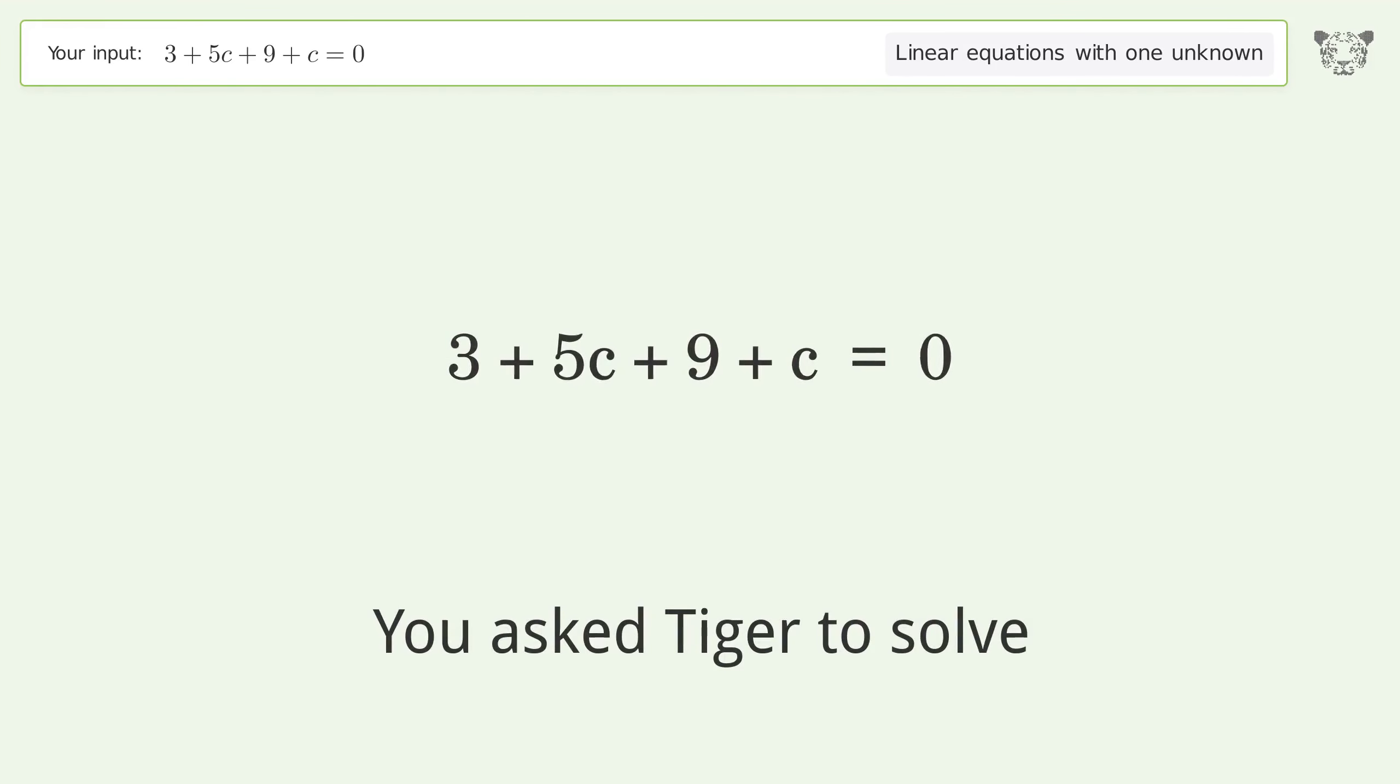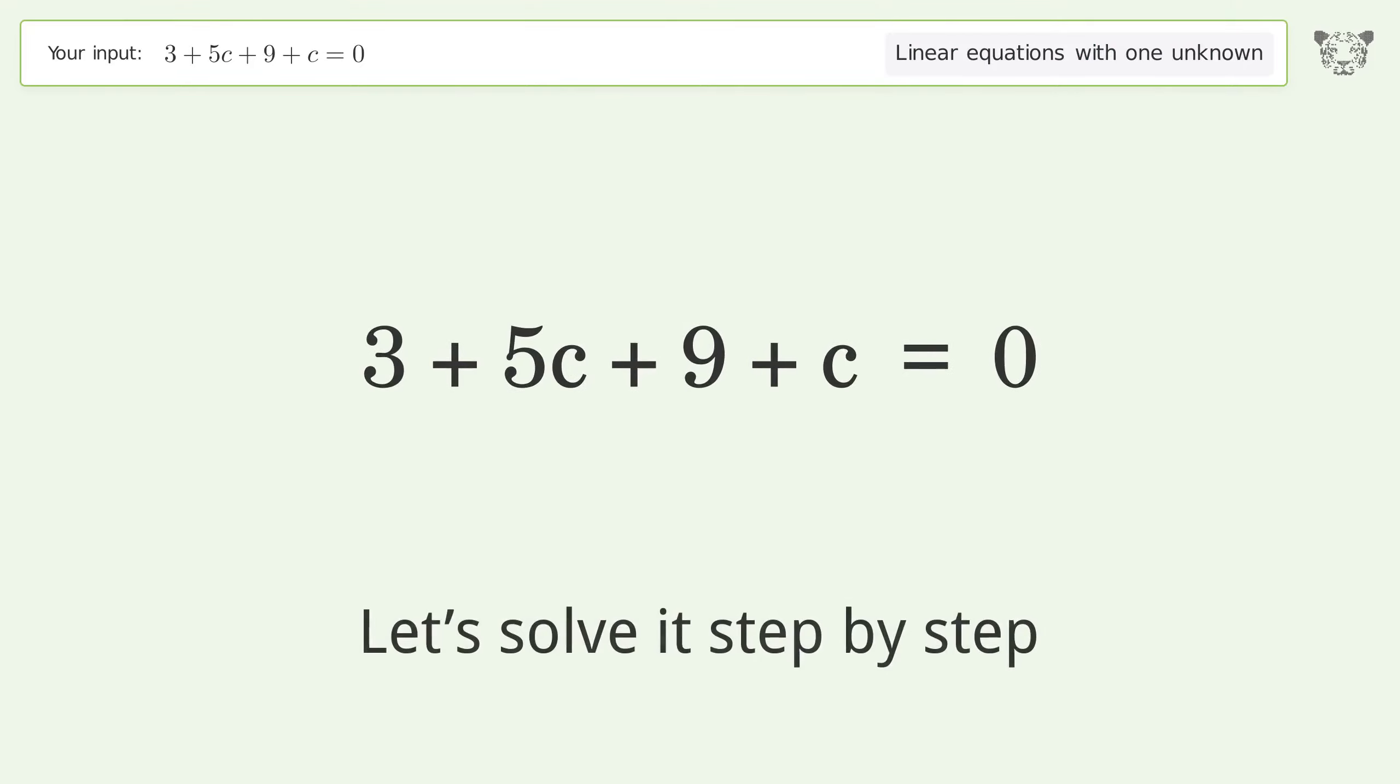You asked Tiger to solve this. This deals with linear equations with one unknown. The final result is c equals negative 2. Let's solve it step by step. Simplify the expression.